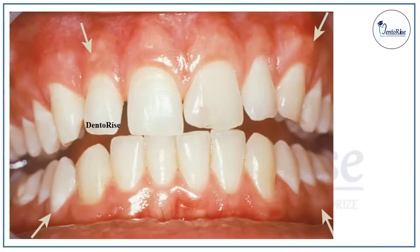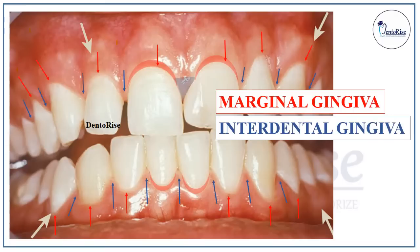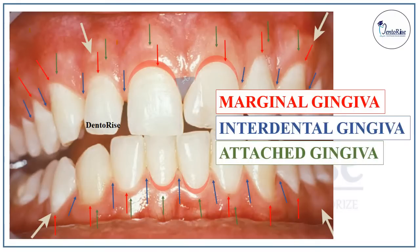Gingiva is mainly of three types: the marginal gingiva, the interdental gingiva, and the attached gingiva. In this video we will be talking about all these three types in detail.